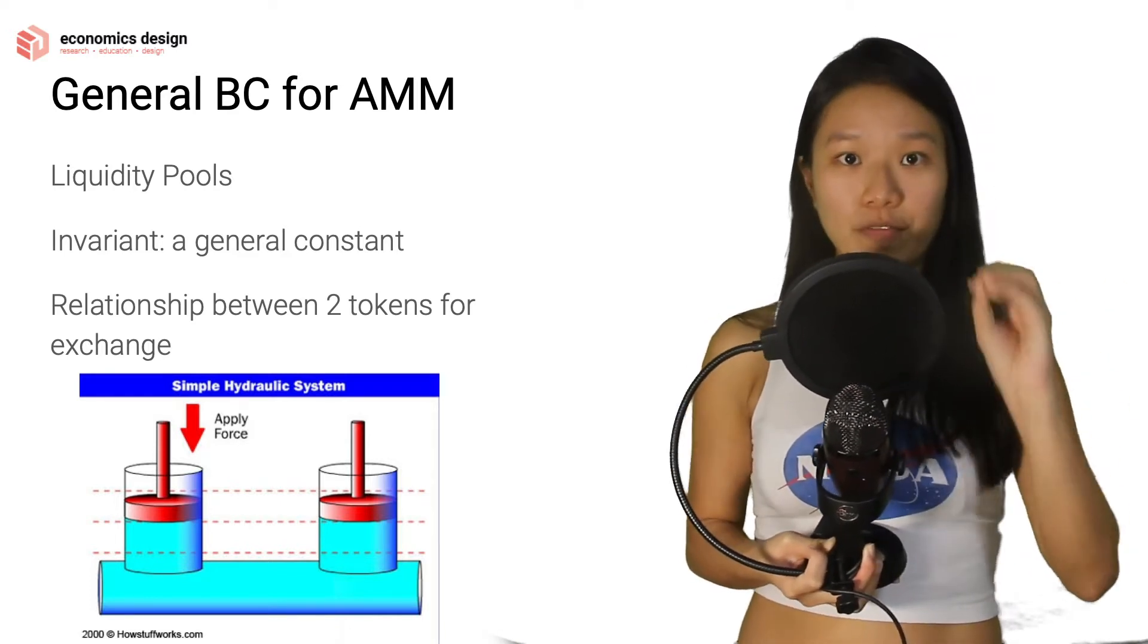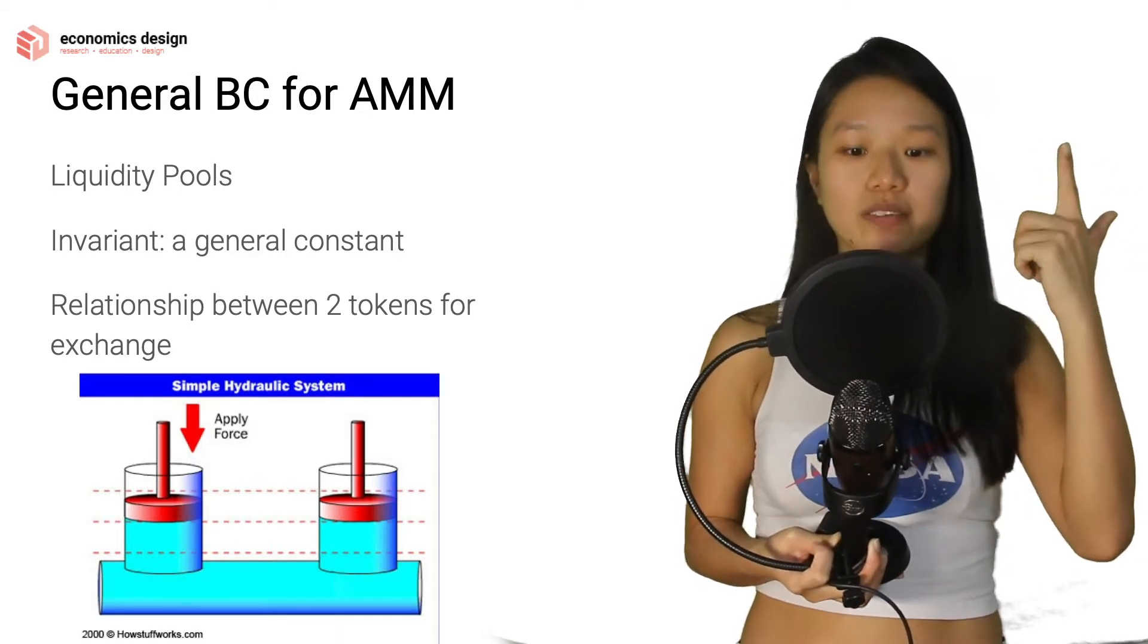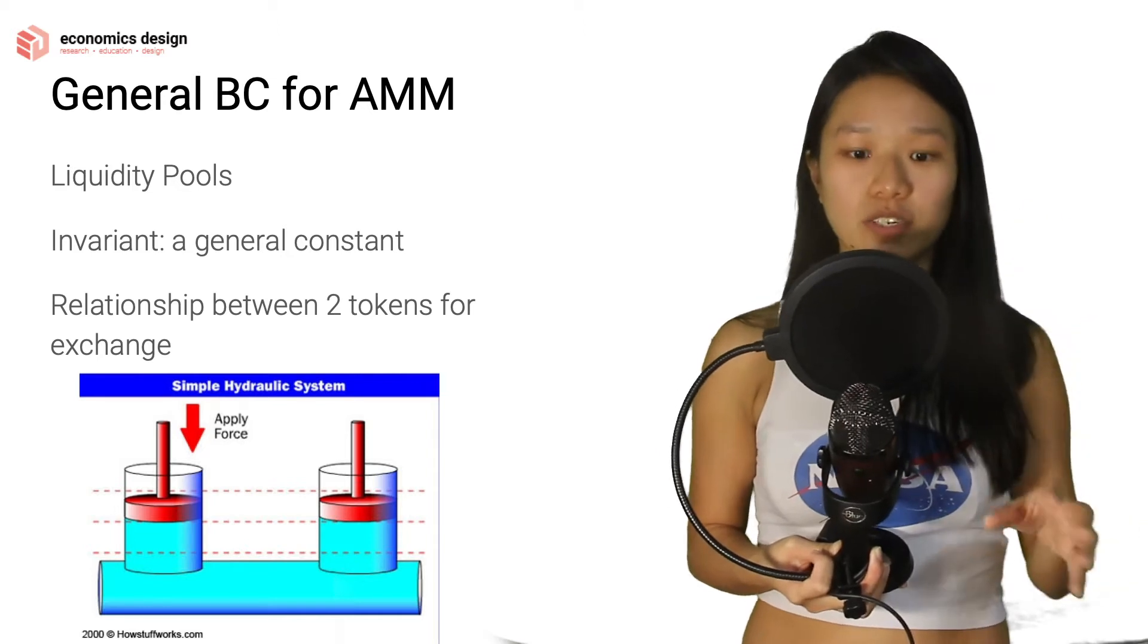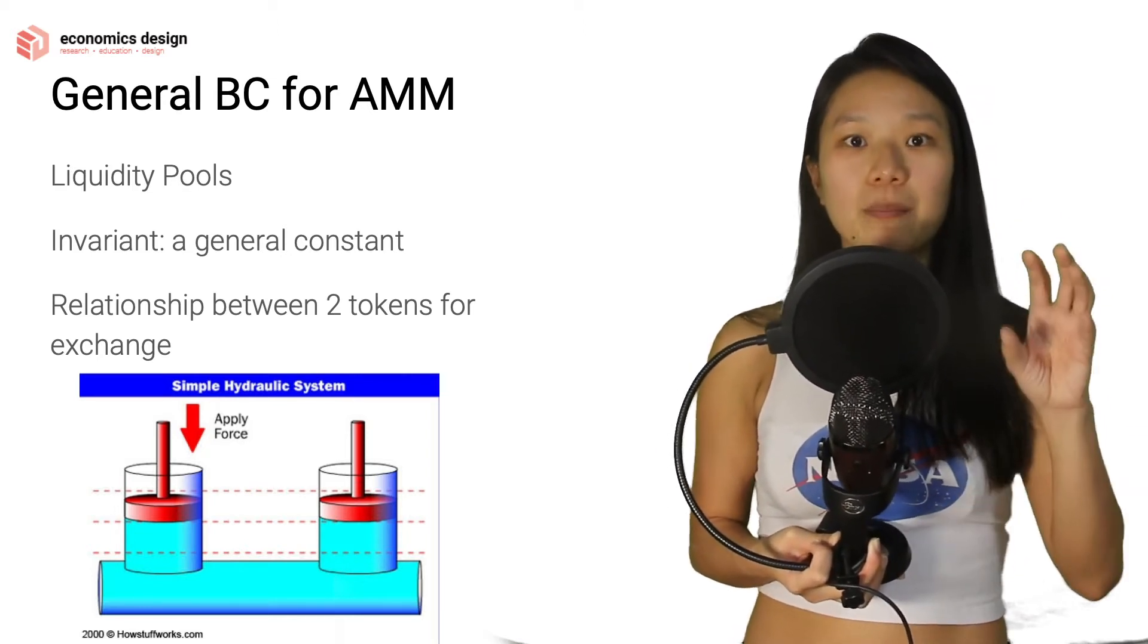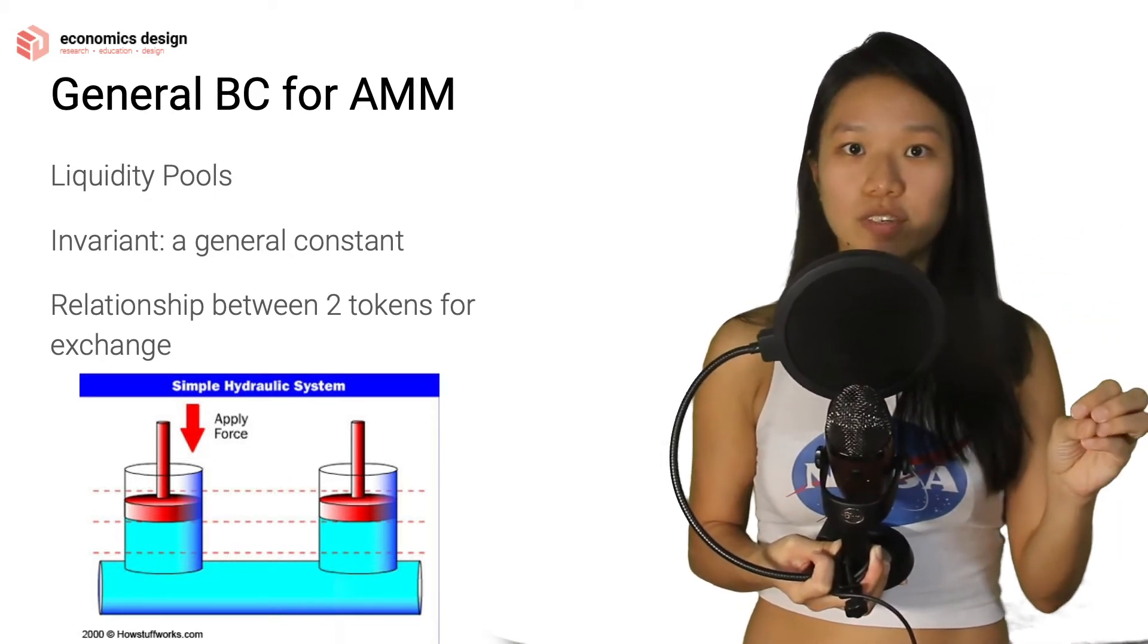Then we also need to have an invariant. We need to have deep liquidity, we need to have an invariant which is a general constant. You as a creator define a constant. We're going to talk about constants later and this invariant, but basically you will define what your invariant is in your ecosystem.